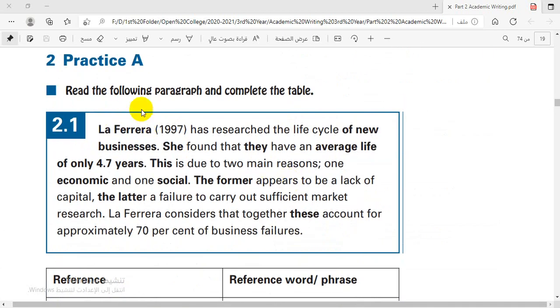Let's move to practice A. Read the following paragraph and complete the table. La Ferreira 1997 has researched the life cycle of new businesses. She found that they have an average life of only 4.7 years. This is due to two main reasons, one economic and one social. The former appears to be a lack of capital, the latter a failure to carry out sufficient market research. La Ferreira considers that together these account for approximately 70% of business failures.